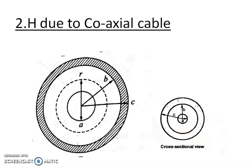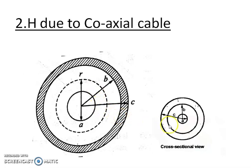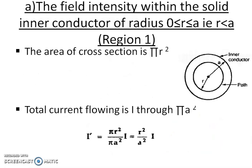This cable is placed along the Z-axis. The current I is uniformly distributed in the inner conductor, and minus I is uniformly distributed in the outer conductor. This is the coaxial cable structure. The inner conductor has radius a, the outer conductor is a concentric cylinder with inner radius B and outer radius C. The space between them is filled with a dielectric, here taken as air.